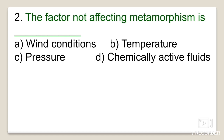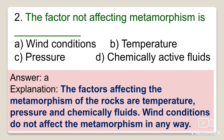The second question asks which factor does NOT affect metamorphism. The agents that bring about metamorphic changes in rocks are: heat or temperature, uniform pressure, directed pressure or stress, and chemically active fluids. Wind does not affect the metamorphic process in any way, so the correct option is option A — wind.